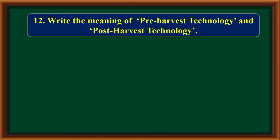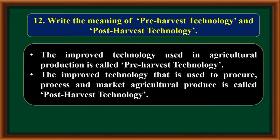Write the meaning of pre-harvest technology and post-harvest technology. The improved technology used in agricultural production is called pre-harvest technology. The improved technology used to procure, process, and market agricultural produce is called post-harvest technology.